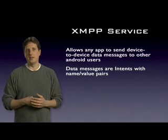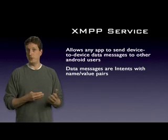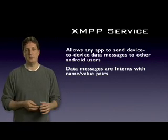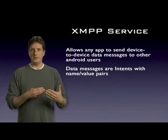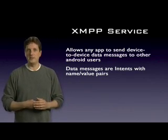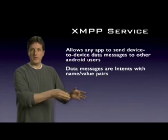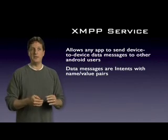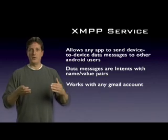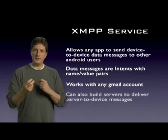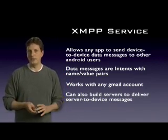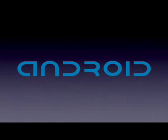But it could also be something else like geographic information. So with appropriate permissions and security, the user could send their location to their buddies so that their buddies could actually see where they are at any given time and plot that information on a map. Again, this works with any Gmail account, so any application can send this type of peer-to-peer messages without having to build any server infrastructure.